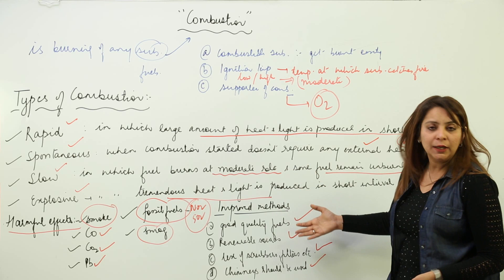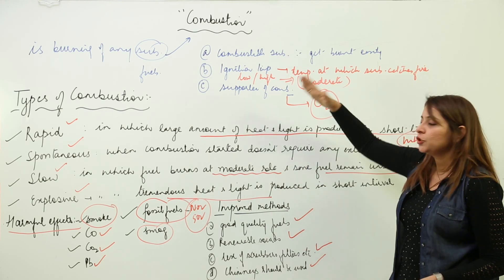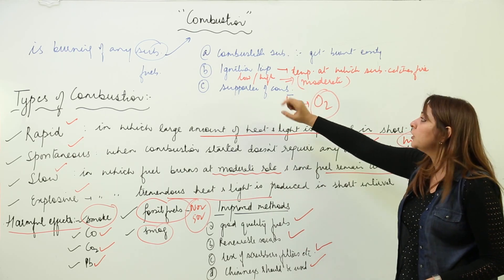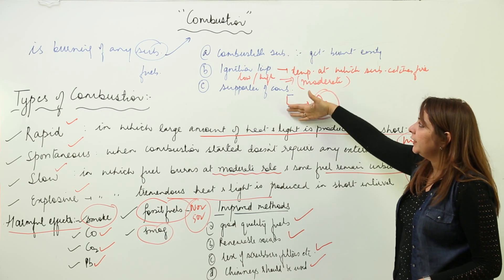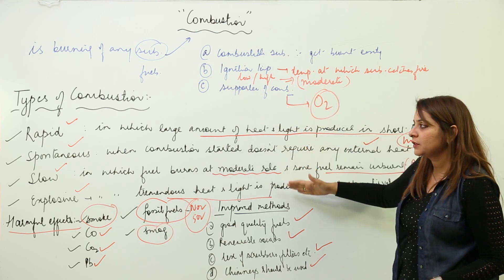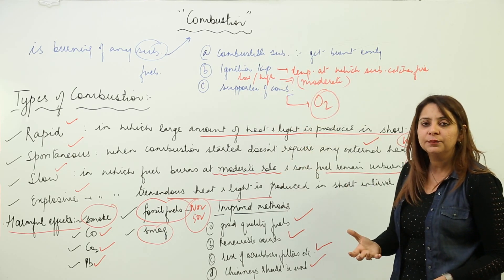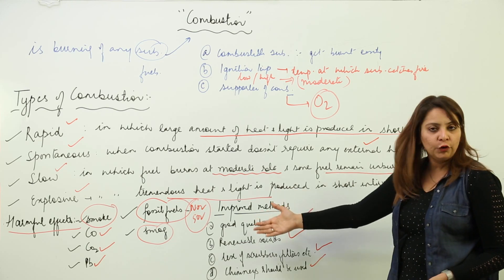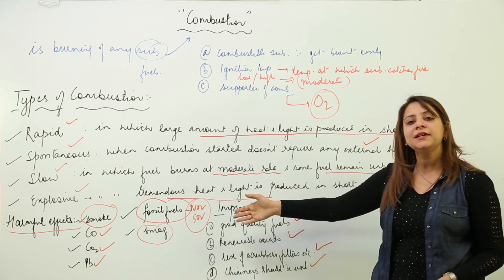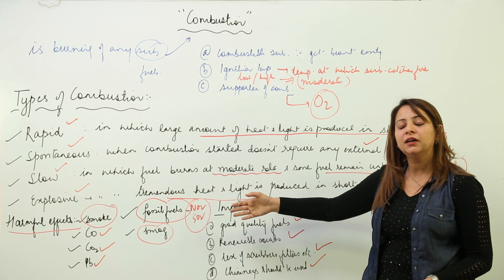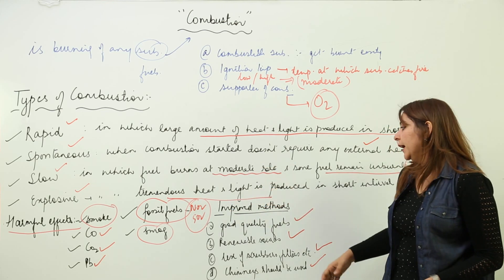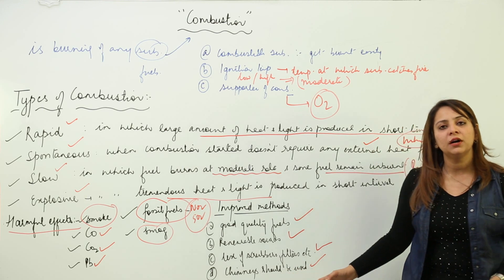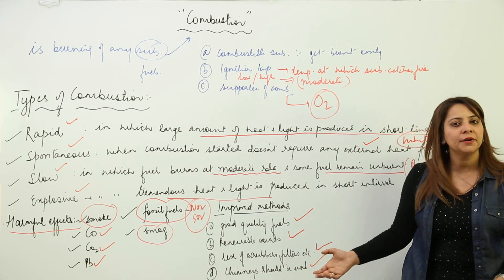In summary, combustion is the burning of any substance, particularly fuels. Three conditions are required, there are different types depending on how fast the substance catches fire, and we have discussed the harmful effects. These improved methods — good quality fuels, renewable sources, scrubber filters, precipitators, and tall chimneys — can be used when carrying out combustion.